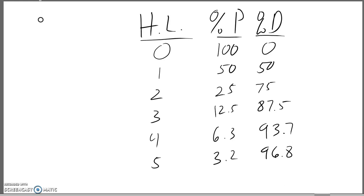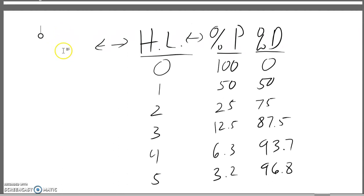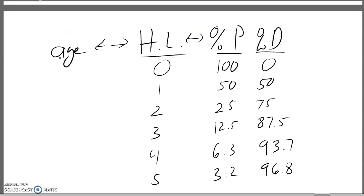We can use this chart to go between percentage and half-life. We can also use it to determine the age — or if we know the age — by dividing or multiplying by the numbers in our chart. We can go between half-lives and percent, and we can also use this to determine the amount. In all these problems, it's a good idea to determine what you're given, and then use the chart to go from one thing to another.